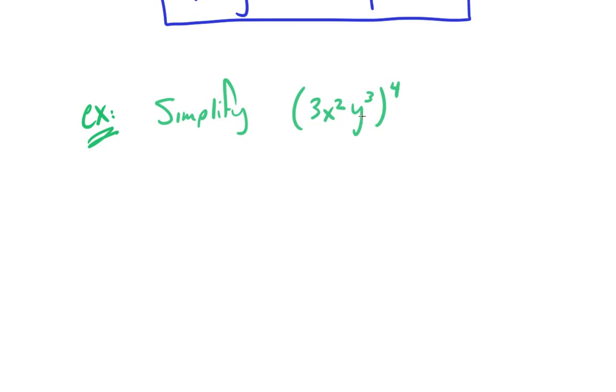There are no pluses and minuses here, which makes things a lot easier. It's just multiplication: 3 times x squared times y cubed.